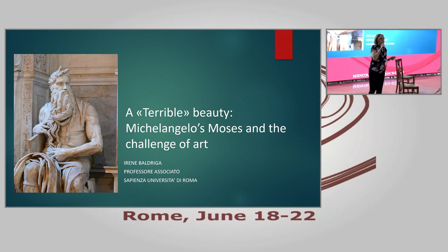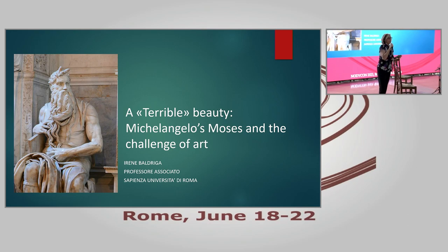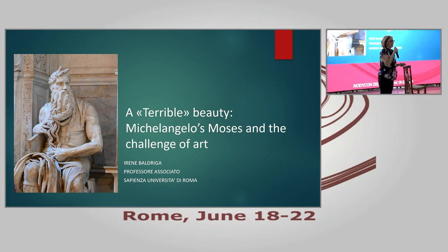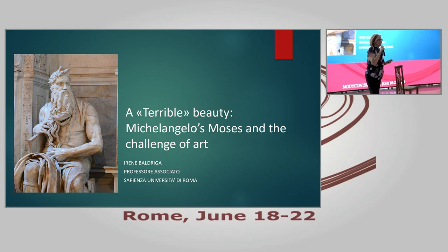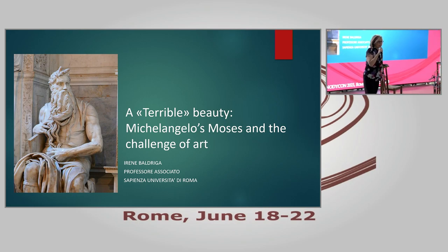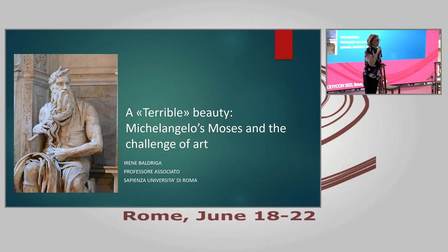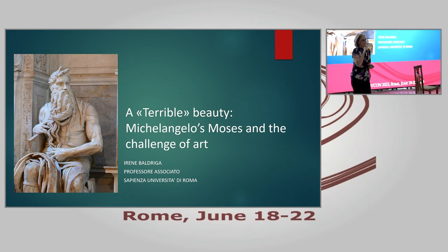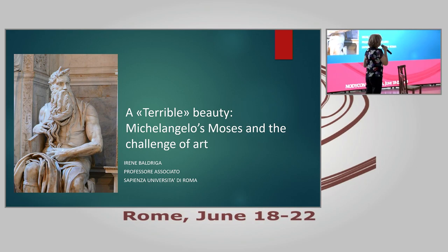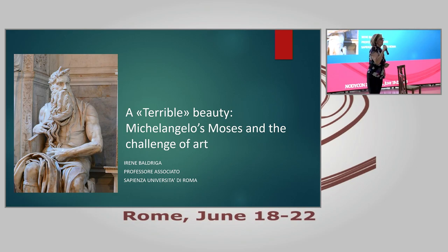Where are we now? The Basilica of San Pietro in Vincoli, where we are, is really a sort of a shrine of Italian Renaissance. Today we will simply talk about one of the masterpieces preserved within this incredible church. It is important to know that this church is one of the most ancient in Rome, extremely linked to the history of early Christian Rome. We'll talk about the tomb of Julius II, and especially the Moses, and I will explain to you why I have chosen the unusual title: a terrible beauty.